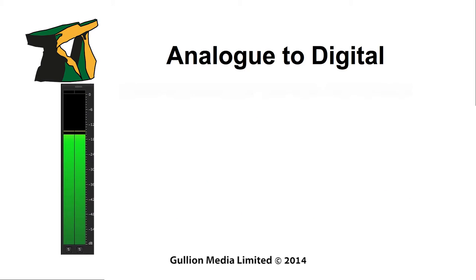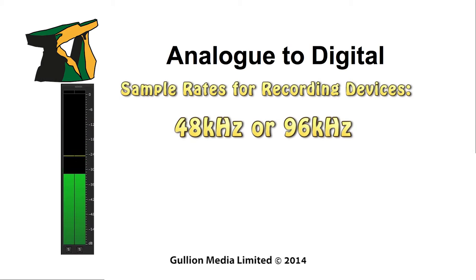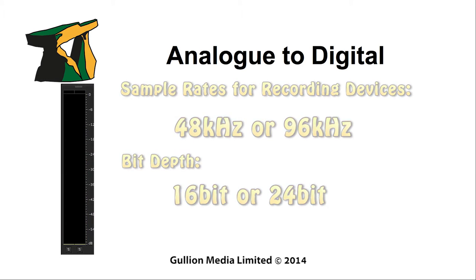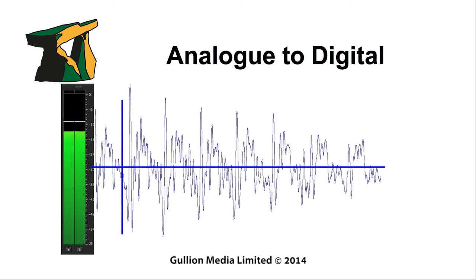Modern audio recording systems can sample either at 48 kHz or 96 kHz, with a bit depth of 16-bit or 24-bit. Therefore, the y-axis measured at 16-bit has 65,536 steps for measuring amplitude or volume, whereas 24-bit has 16,777,216 steps.